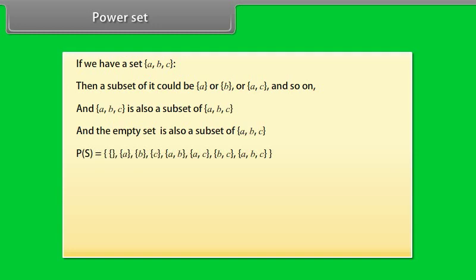P(S) is equal to the set containing empty set, A, B, C, A B, A C, B C, and A B C. If the original set has N members, then the power set will have 2 raised to power N members.